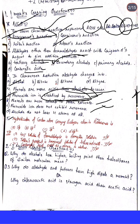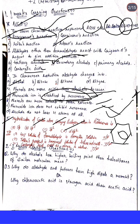Next MCQ: the hybridization of the carbon atom carrying the halogen atom in a haloarene is — options are sp, sp3, sp2, and dsp2. The correct answer is sp2 hybridization (option c).